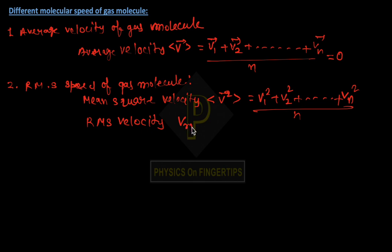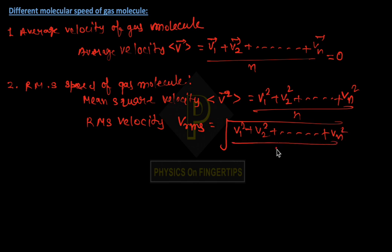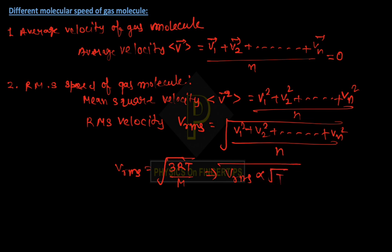V RMS equals under root of V1 squared plus V2 squared plus up to Vn squared divided by n. When we solve this, the value of V RMS comes out to be under root of 3RT by m. So from this, it is clear that V RMS speed is proportional to the square root of temperature.